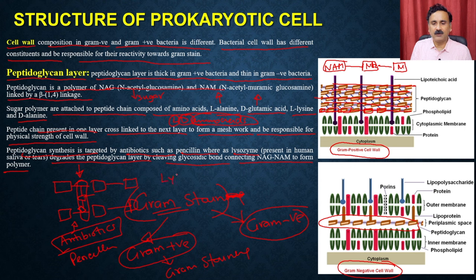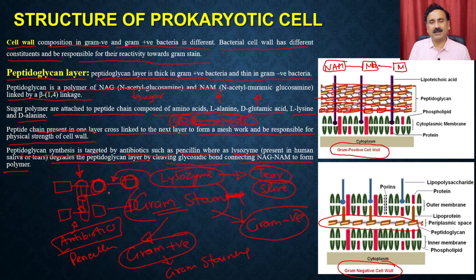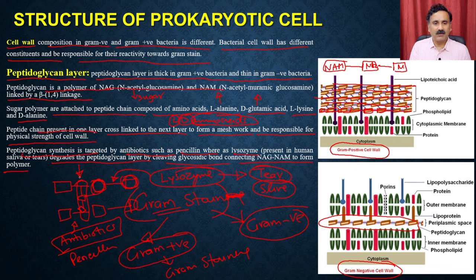There are two options to destroy the cell wall: you can use antibiotics like penicillin which target peptidoglycan synthesis, or you can use an enzyme called lysozyme which degrades the linkage between NAM and NAG. Lysozyme is a very important enzyme present in our tears and saliva, and that is how tears and saliva protect humans from bacterial infection — as soon as bacteria encounters lysozyme, it cleaves the bond between NAM and NAG, destroying the cell wall. Once the cell wall is destroyed, bacteria are very susceptible to osmotic damage and will lyse and die.